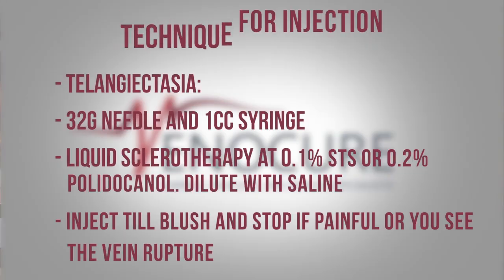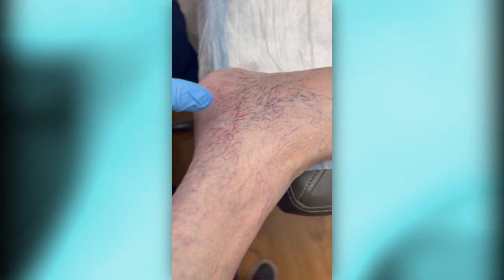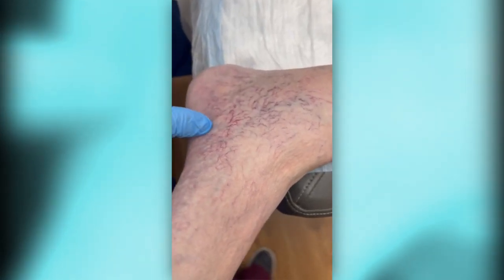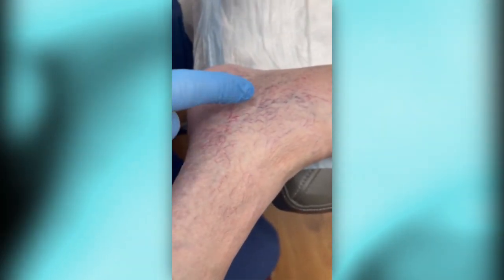How do we do injections? It all depends on the vein you're injecting. Let's start with the simplest: telangiectasias, which are what we call spider veins. You use a 32-gauge needle — this is very, very tiny, the patient barely feels it — and the concentration is very low: 0.2% polidocanol or 0.1% STS. When you inject, you inject until you see the vein blushing away, or you see a blip in the skin, which means the vein has ruptured.